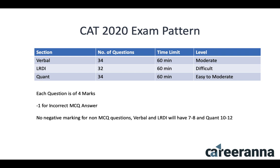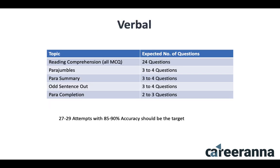The usual marking scheme is: each question carries 4 marks, you get minus 1 for an incorrect MCQ answer, and there is no negative marking for non-MCQ questions. Each section will have certain non-MCQ questions — on average, Verbal and LRDI will have 7 to 8 non-MCQ, and QUANT will have around 10 to 12 non-MCQ. This is how the overall exam pattern may look in CAT 2020, unless there are drastic changes introduced at the time of the CAT notification in July or August.